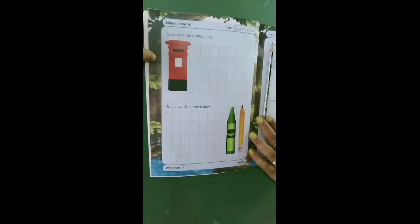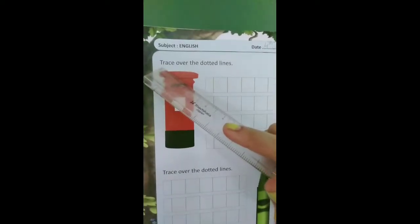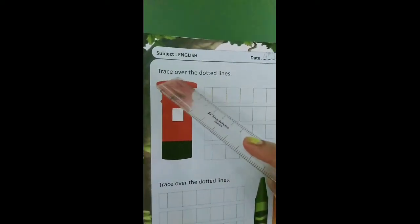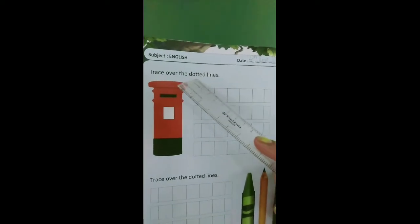And write the date on the top of the book, 4th June 2020. And read the heading with me: Trace over the dotted lines.